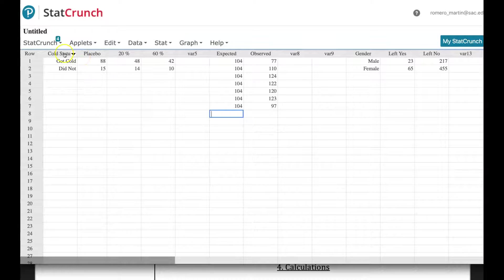So this is, you want to be careful here how we do it. So you have this column here, your row data, the ones that go across. So got cold, did not get a cold. Placebo, the 20% of the drug, 60%, and then the outcomes here.